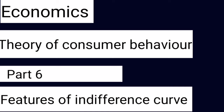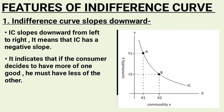The first feature of the Indifference Curve is that it slopes downward. The Indifference Curve always has a negative slope. As seen in the graph, the curve moves from the Y-axis to the X-axis, left to right, indicating a negative slope and an inverse relationship between the two goods X and Y.